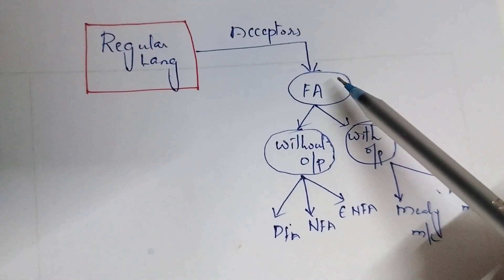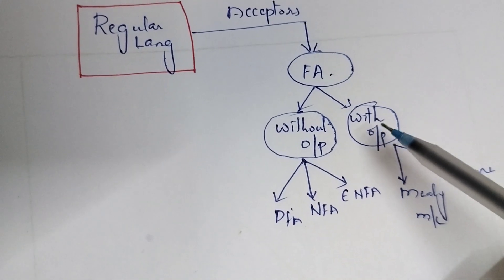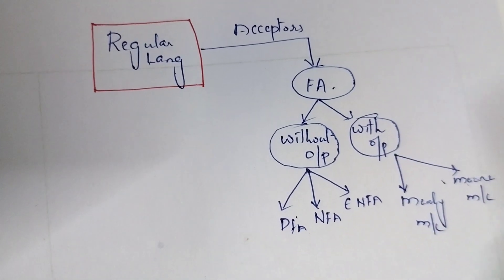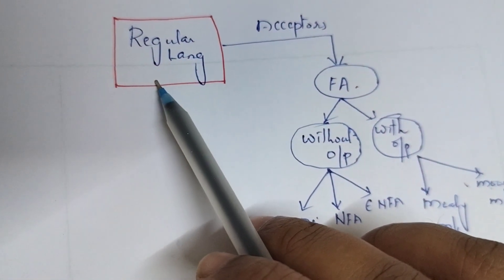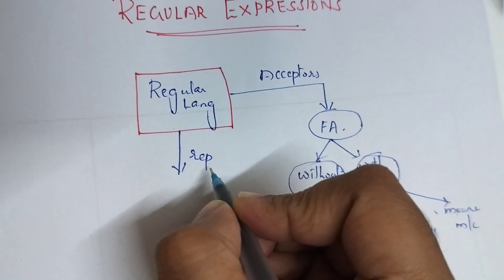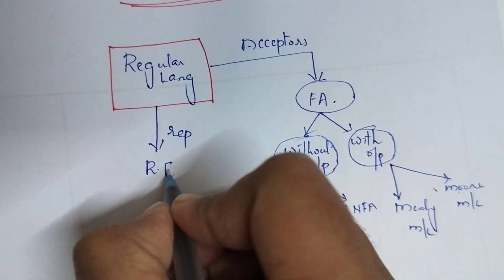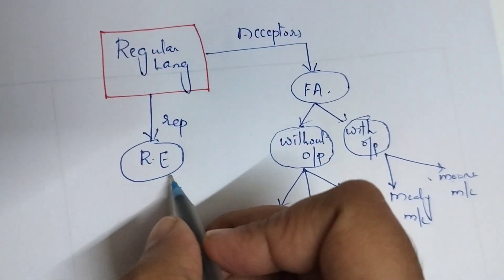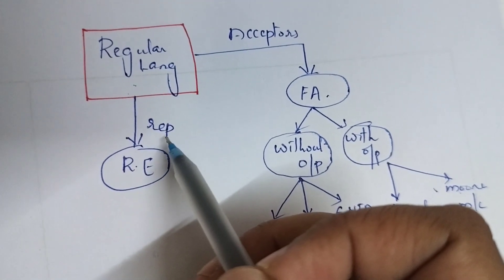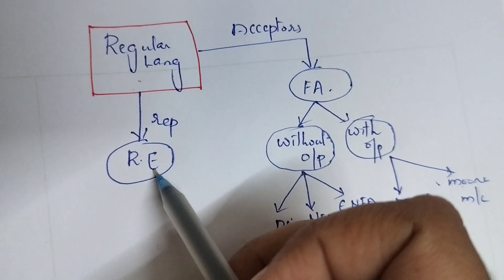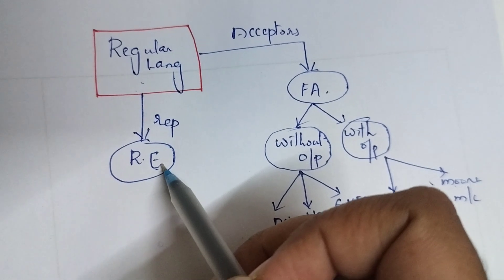In the previous unit we discussed about acceptors — that is, finite automata — and the types with and without output category. In this unit we are going to study about the mathematical representation of regular languages. Regular languages are represented by using a mathematical expression which is known as a regular expression, abbreviated as RE. Regular expression is the mathematical representation of a language accepted by finite automata.